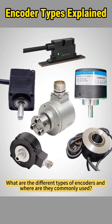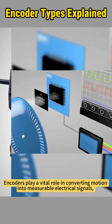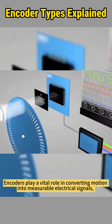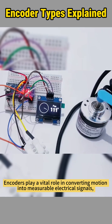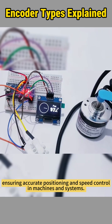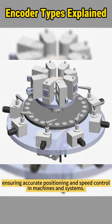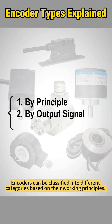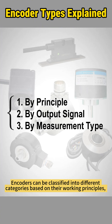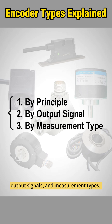What are the different types of encoders and where are they commonly used? Encoders play a vital role in converting motion into measurable electrical signals, ensuring accurate positioning and speed control in machines and systems. Encoders can be classified into different categories based on their working principles, output signals, and measurement types. Let's explore each one.